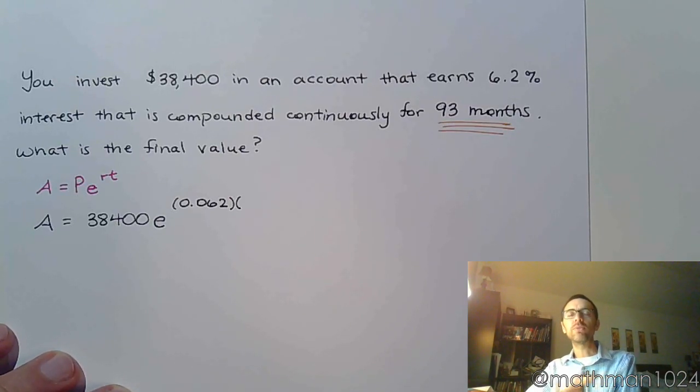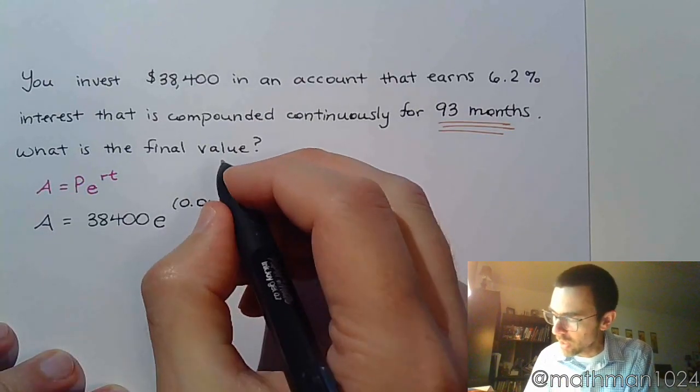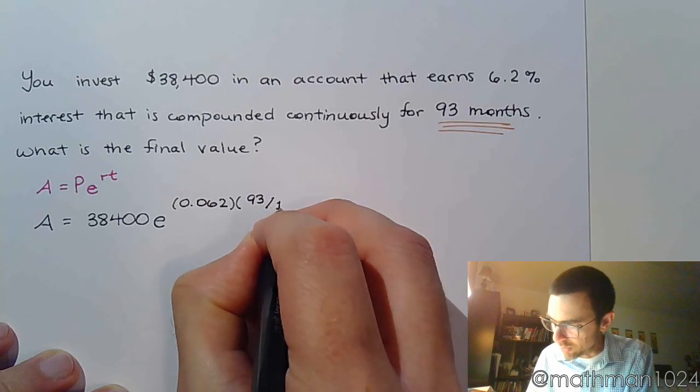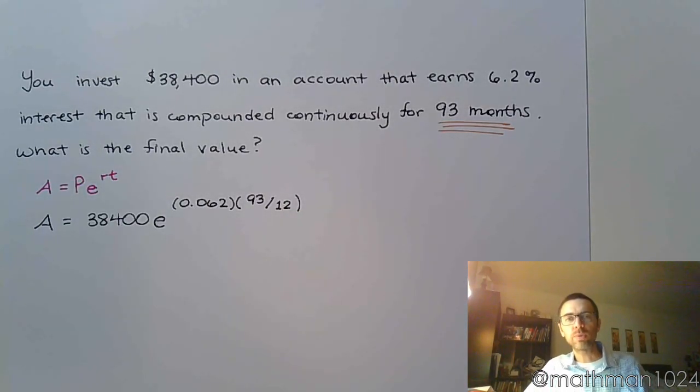And, this isn't anything that you need to do off on the side. The calculator is going to do all the work for you. So, you take the 93, and you divide it by the number of months in a year. So, 93 divided by 12. And, again, the calculator is going to do all that for you. There's no need for you to type this in and deal with any kind of rounding errors.